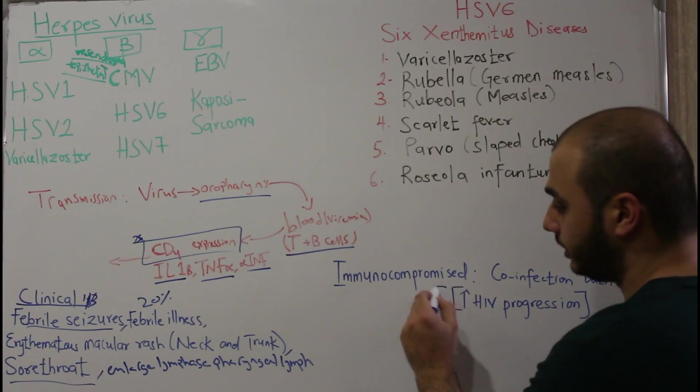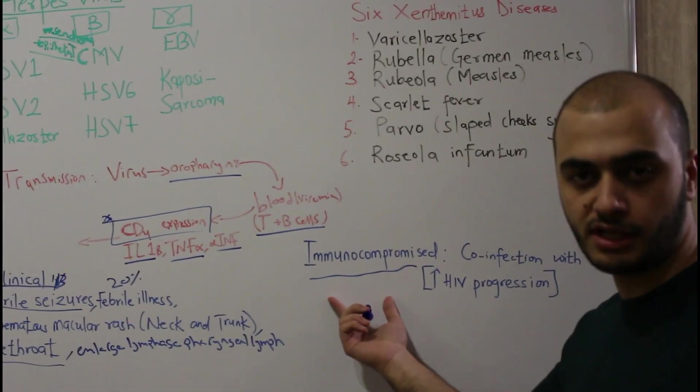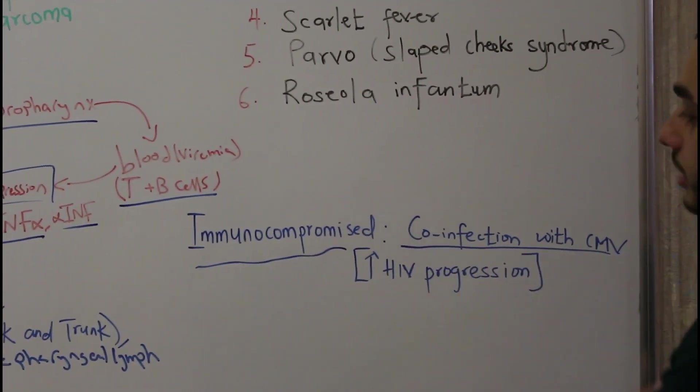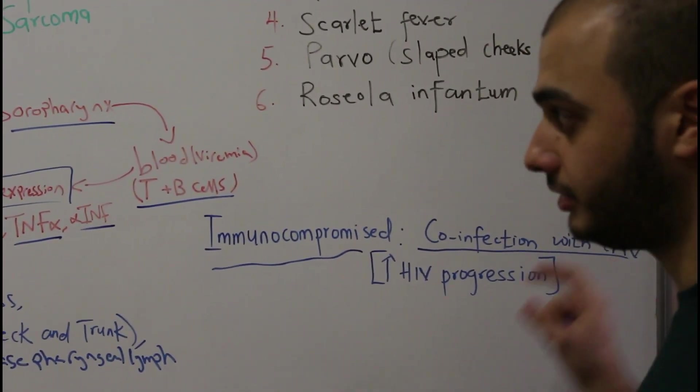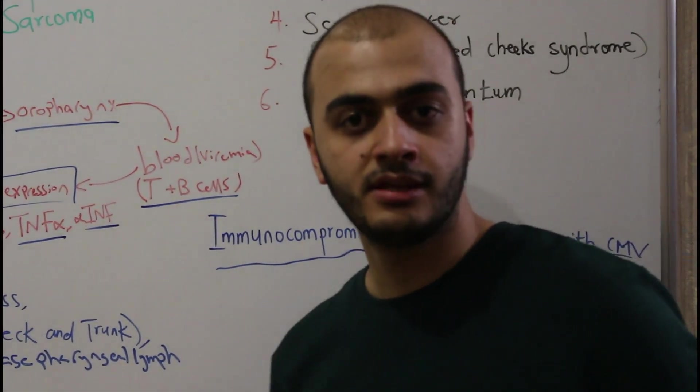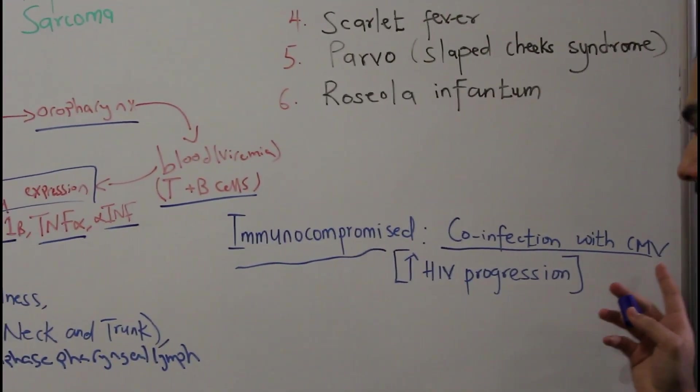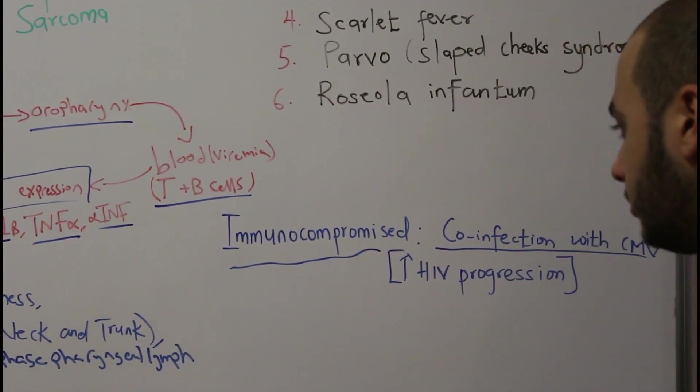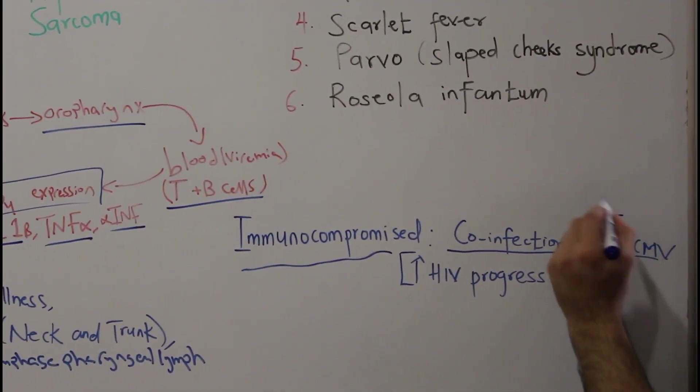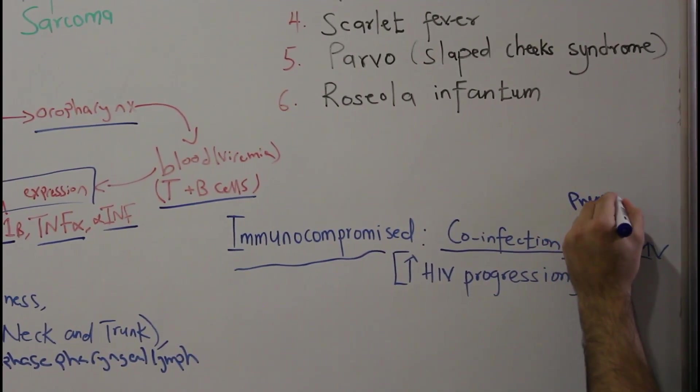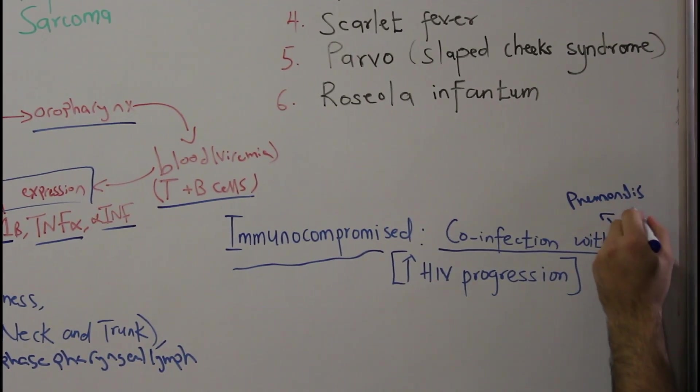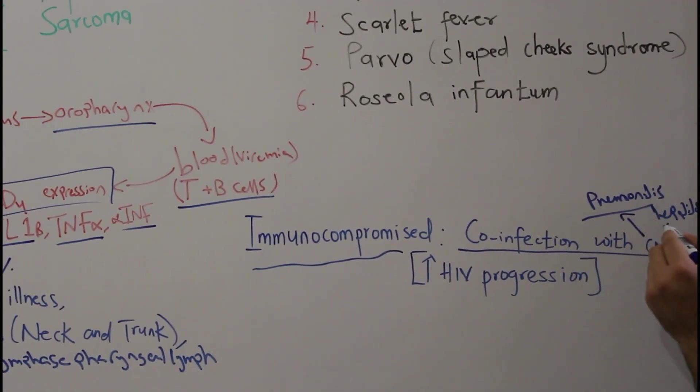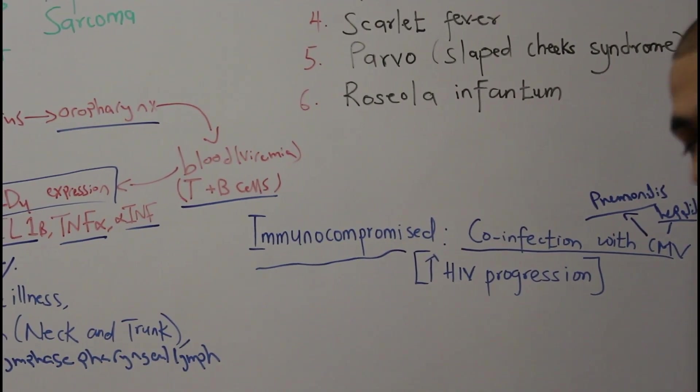In immunocompromised patients, the virus can reactivate as secondary infection. At that time it will mostly be a co-infection with cytomegalovirus, because cytomegalovirus is also an opportunistic virus associated with AIDS and immunocompromised patients. It can present with pneumonitis and hepatitis, but mostly these two.